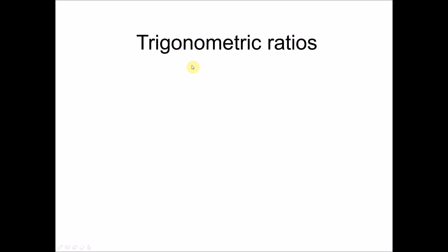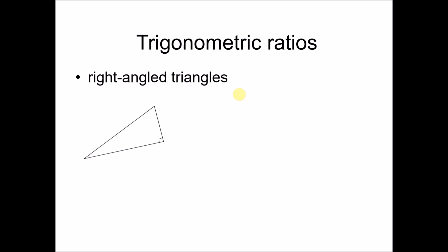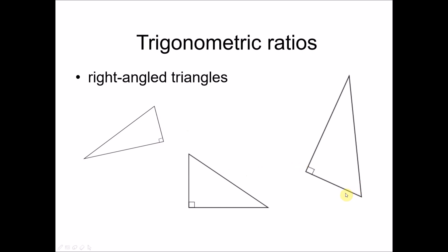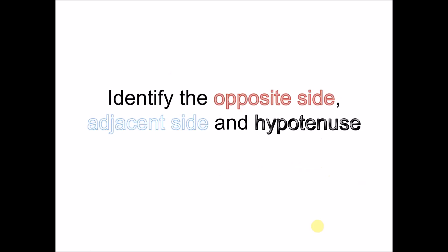In this chapter we are going to deal with trigonometric ratios, which only apply to right angle triangles. Throughout the whole of Chapter 5 we are dealing with right angle triangles. The key property of a right angle triangle is that one of the angles must be 90 degrees. Here are some examples.